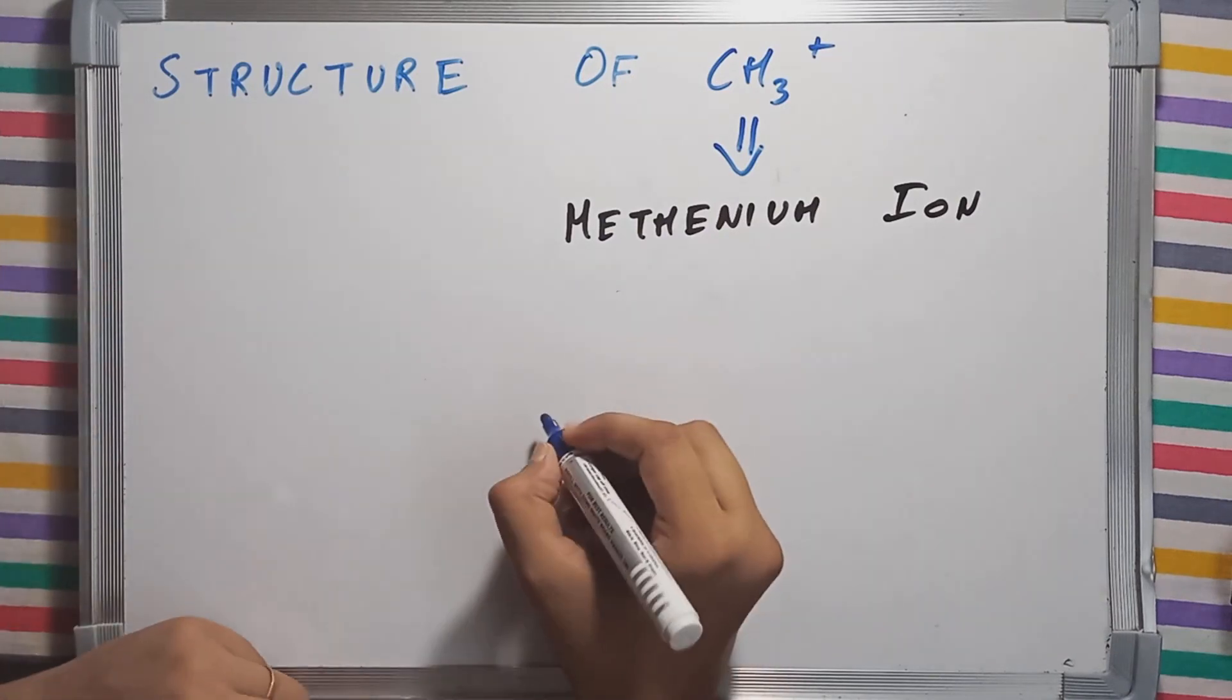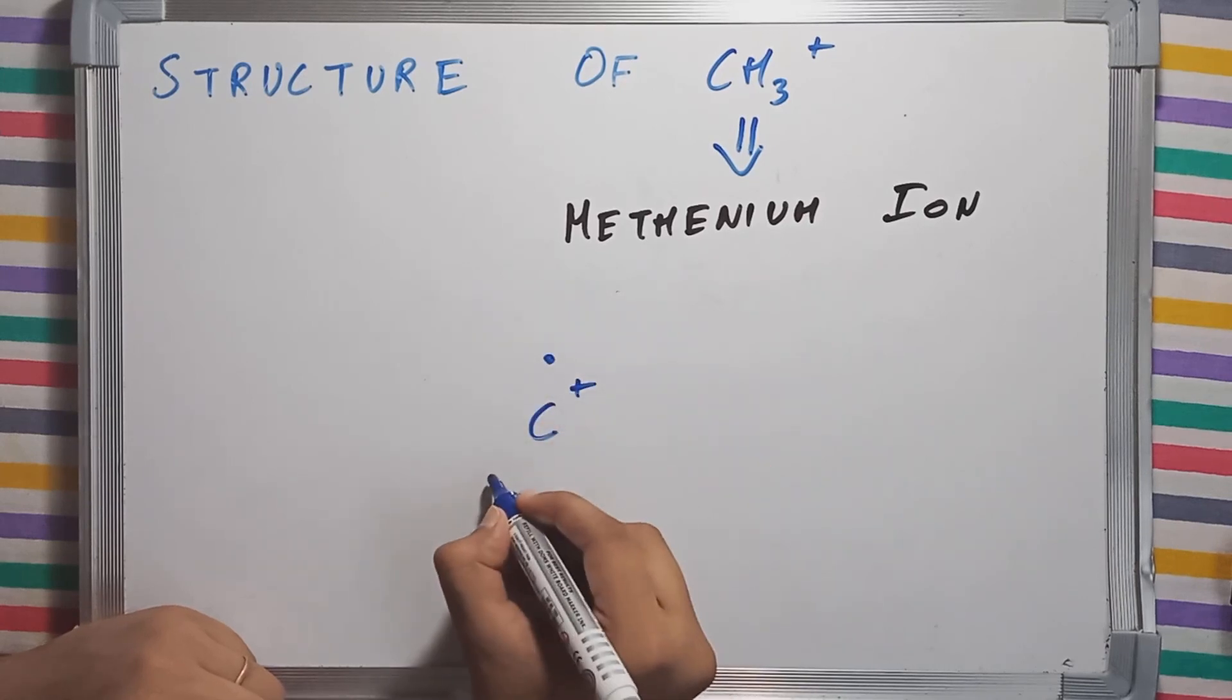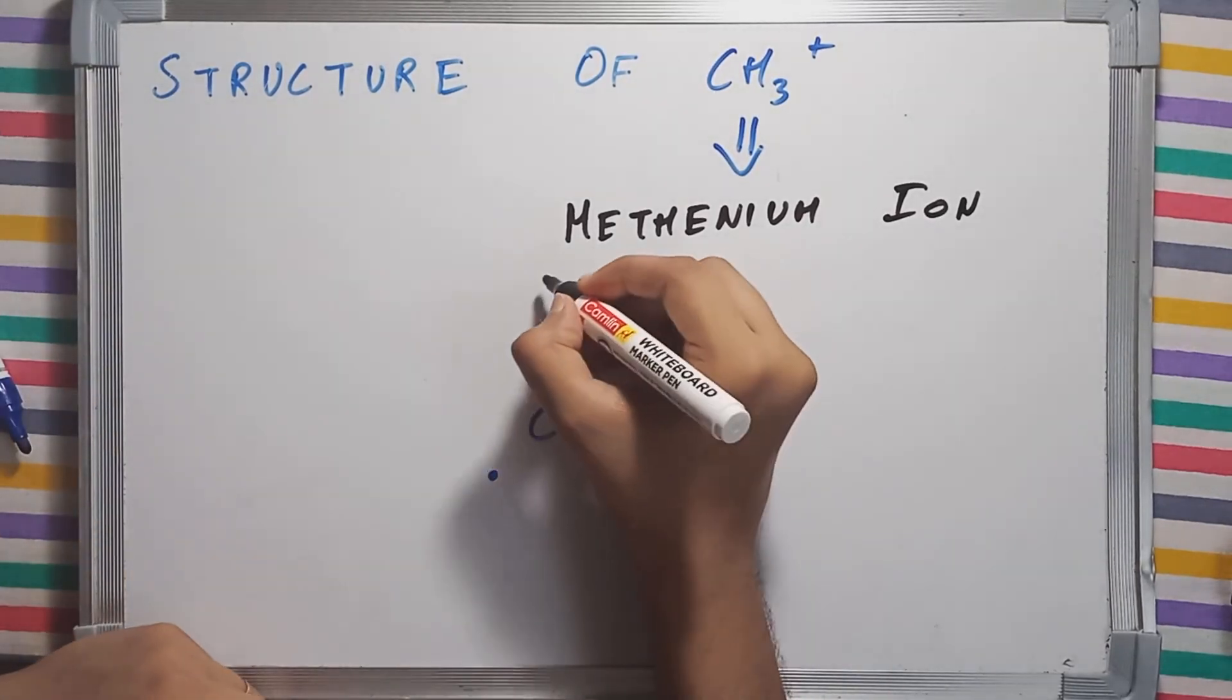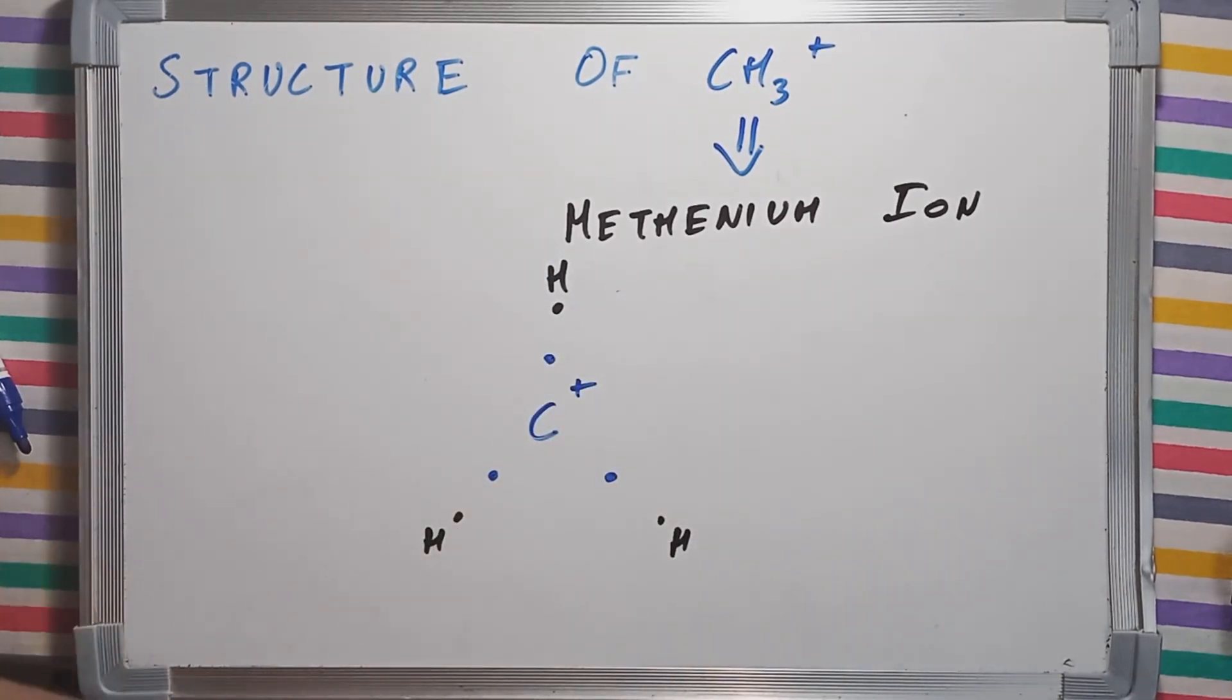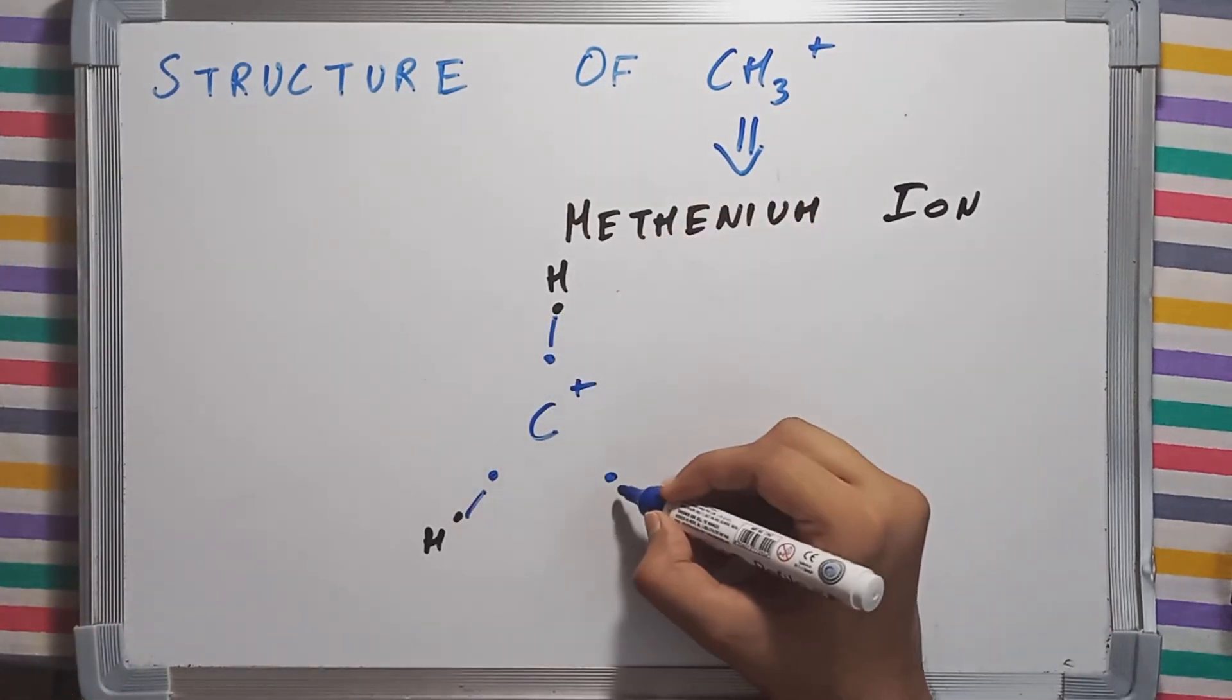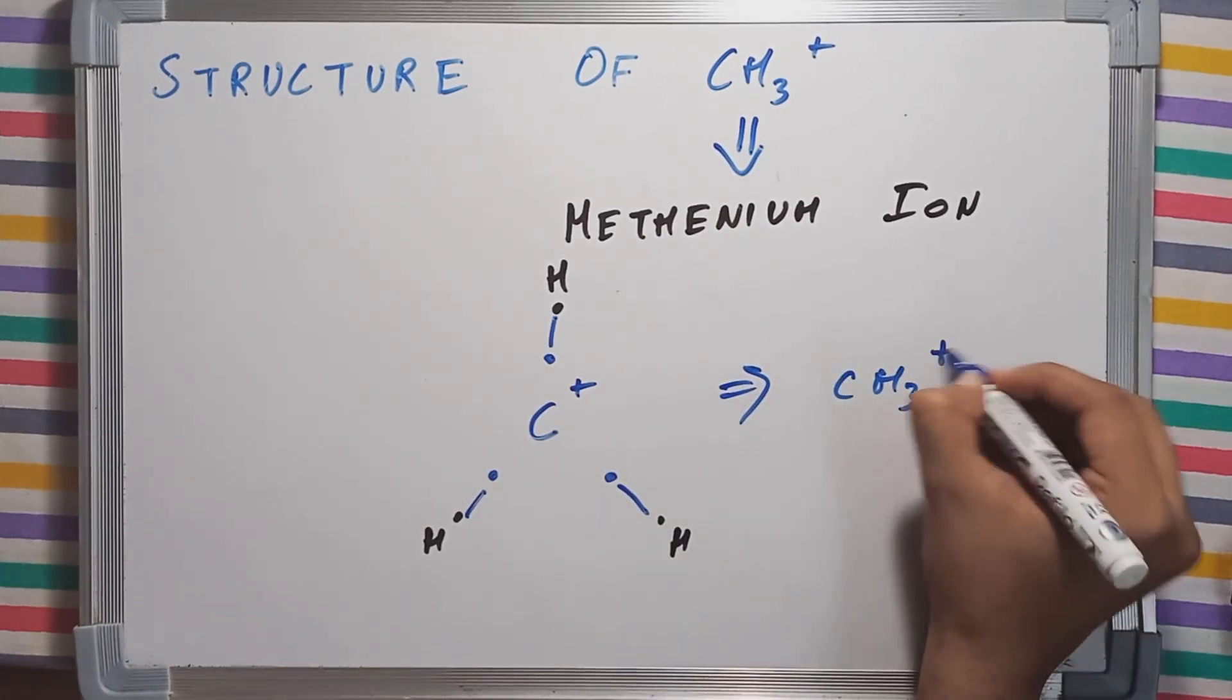Now, carbon plus had 3 valence electrons, and hydrogen had single valence electrons. These will make single bonds. And this is your structure of CH3 plus ion.